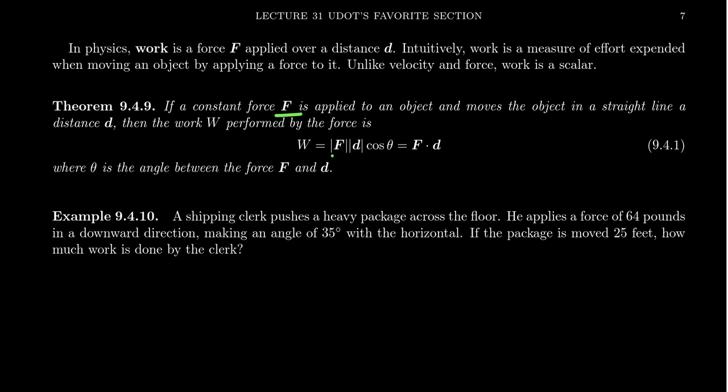From the law of cosines, F dot d is the same as the magnitude of F times the magnitude of d times cosine of theta, where theta is the angle between F and d. The magnitude of F is how much force is applied, d is the distance to be traveled, and we measure the angle between these forces because they don't have to be in the same direction.